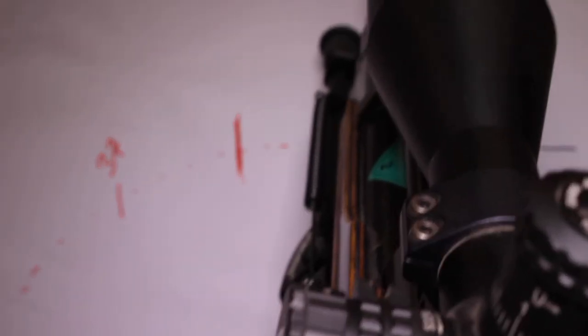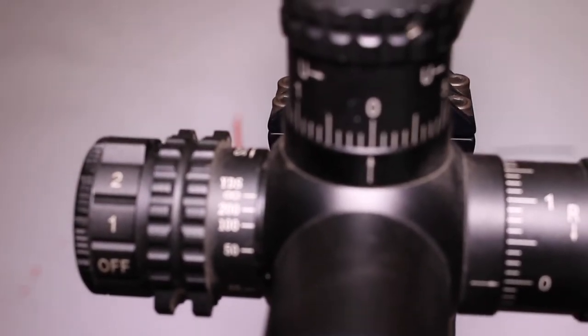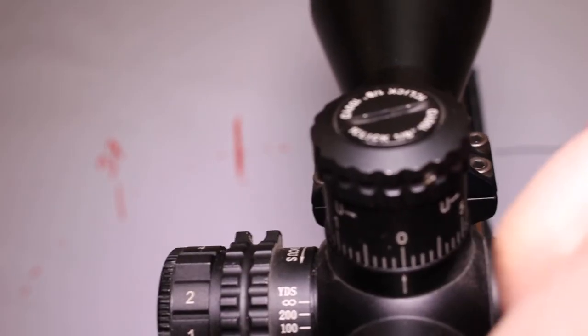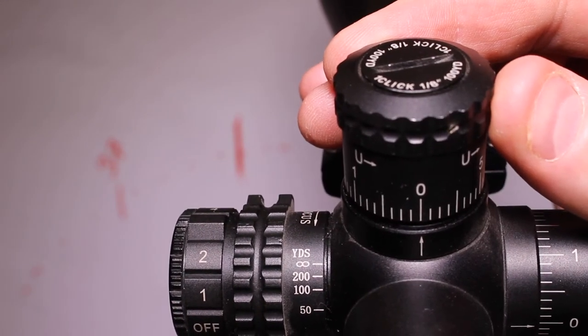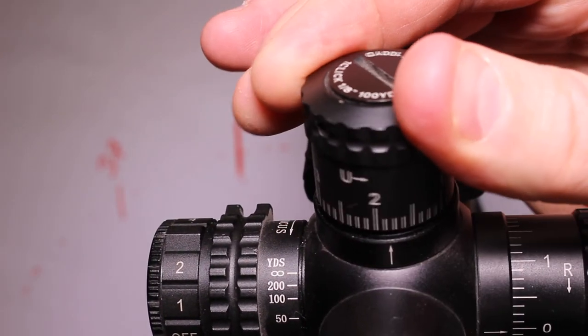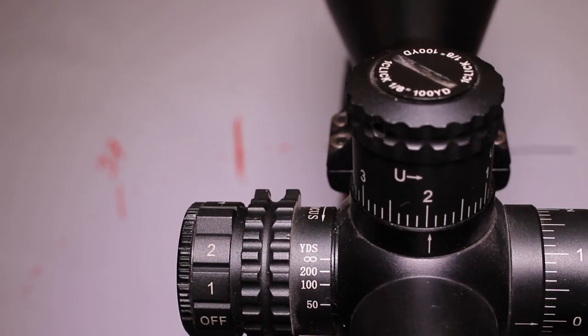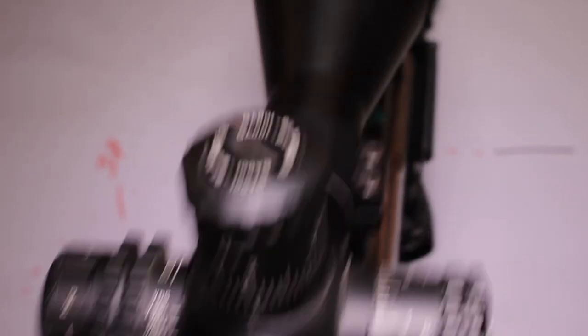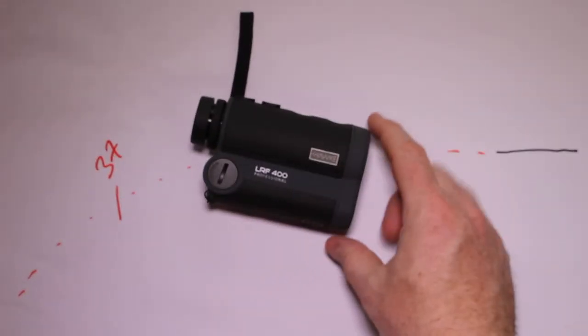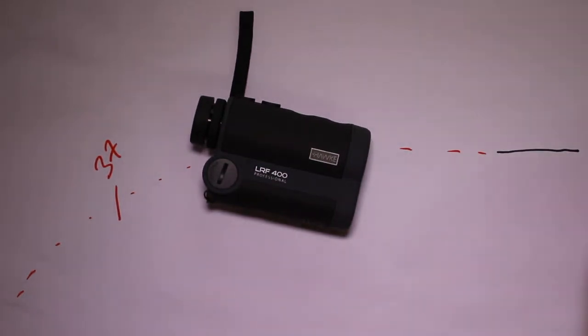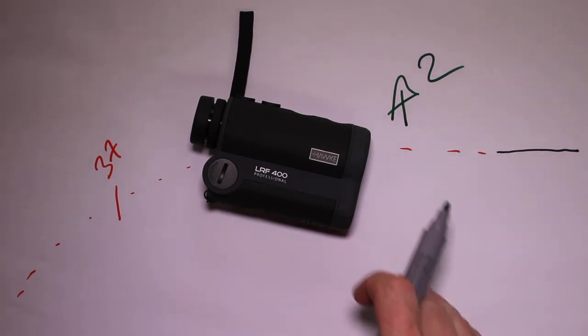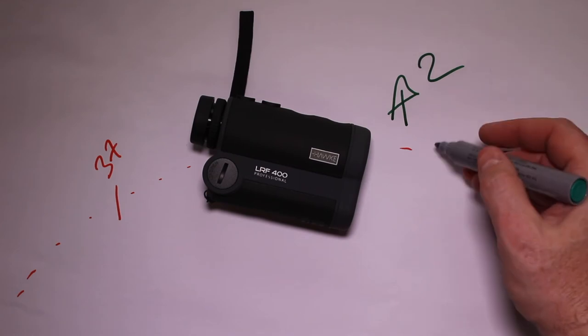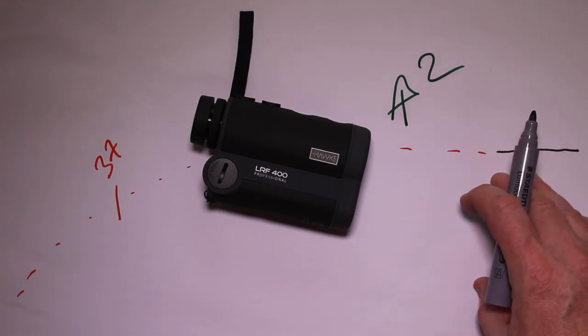On the top of my sight, I've got this adjuster ring here. And when I went out to 37 yards, I just moved that up to two. And that brought me back onto target. So I know when I range find something, if it's 37 yards, that means I've got to go up two. But I also know that anything up to about 30, 33 yards, I don't need to adjust my sights.